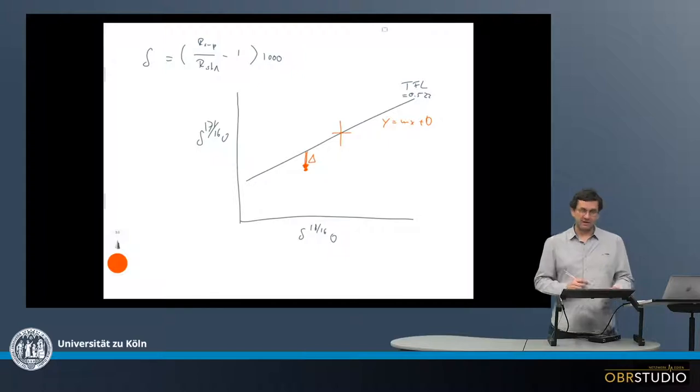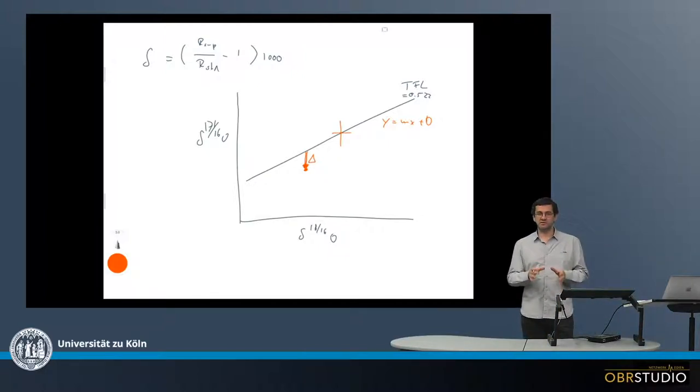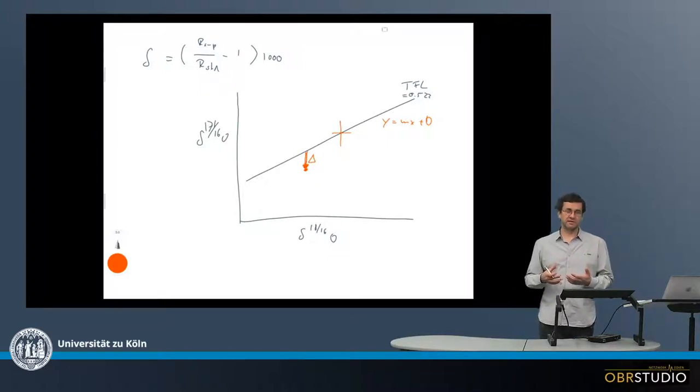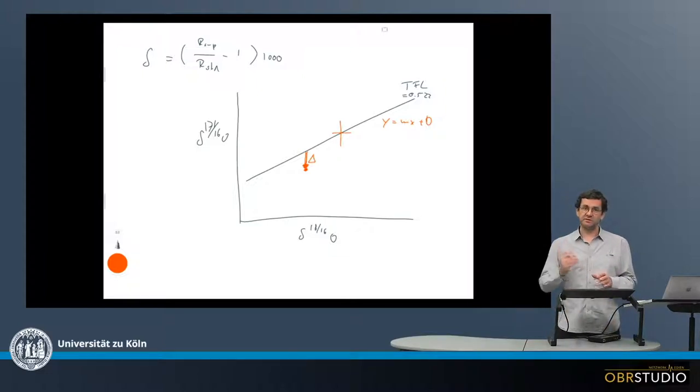This deviation is then called capital delta. This can be confusing because that capital delta is used in various contexts for isotopes. This is just a deviation from the TFL line, or the fractionation line.